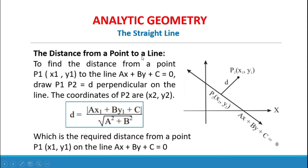The distance from a point to a line. To find the distance from a point P₁(X₁, Y₁) to the line AX plus BY plus C equals 0, draw a perpendicular from P₁ to P₂ on the line, where the distance equals D. The formula is D equals the absolute value of AX₁ plus BY₁ plus C, all over the square root of A squared plus B squared.